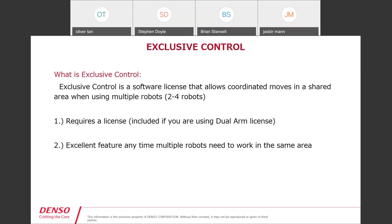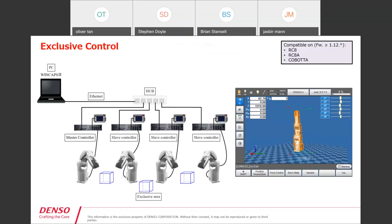The second feature is exclusive control. Exclusive control is a software license that allows you to have a shared area among robots. In assembly applications you're often picking up parts from different parts of the cell and bringing them into a shared area. This is useful when using multiple robots — no need for it with a single robot. It requires the license, but if you're using our dual arm license and setup it comes alongside it. Here's a schematic showing how exclusive control gets set up among controllers — you'd have one master controller and then slave controllers beyond that, with an example showing three separate shared areas that the robots are working in.